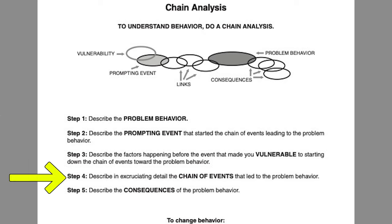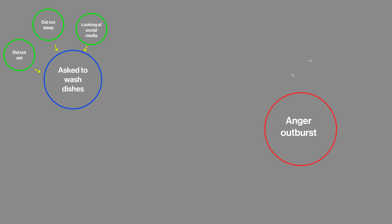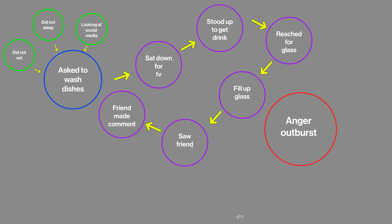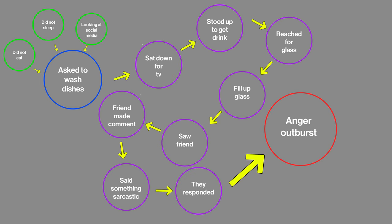Step four is to describe in excruciating detail the chain of events that led to the problem behavior. DBT really wants you to be very detailed about all the little events that led up to the problematic behavior. So using our example of being asked to wash the dishes — what were you doing right before that? Perhaps you sat down to watch TV for the first time all day, then stood up to get a drink of water in the kitchen, reached for a glass, went to fill it, and then saw your friend in the kitchen. Your friend made a comment about the dishes in the sink, you said something sarcastic, they responded back, and so on. You want to be super detailed about every single moment, almost down to the minute-to-minute detail.